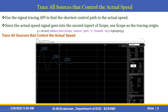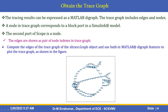By using this command, we can get outputs showing target speed versus vehicle dynamics scope. Then we obtain the trace graph. The tracing results can be expressed as a MATLAB digraph. This trace graph includes edges and nodes. A node in a trace graph corresponds to a block port in a Simulink model. The second port of the scope is a node, and the edges are shown as per the node indexes in the trace graph.